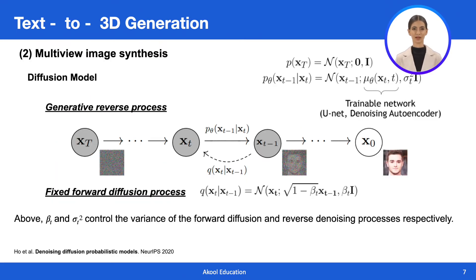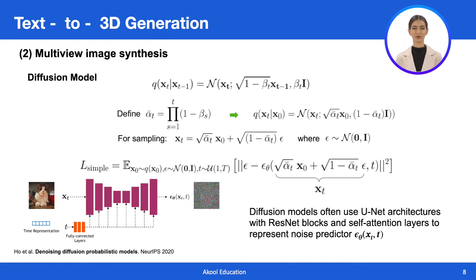Allow me to provide a brief introduction to the basic concept of the diffusion model. The diffusion probabilistic model is a parameterized Markov chain trained through variational inference to generate samples that align with the data after a finite period. The transitions in this chain are learned to reverse a diffusion process, which is a Markov chain gradually introducing noise to the data in the opposite direction of sampling until the signal is obliterated. In cases where the diffusion involves small increments of Gaussian noise, setting the sampling chain transitions to conditional Gaussians proves sufficient, enabling a notably straightforward neural network parameterization.